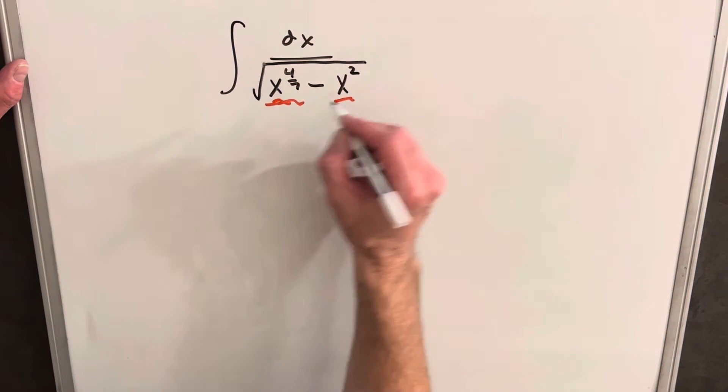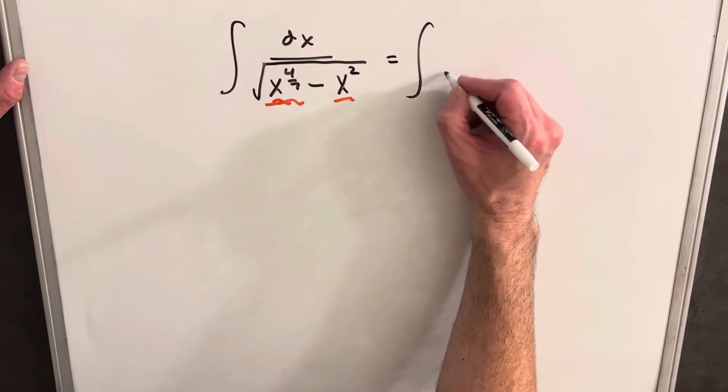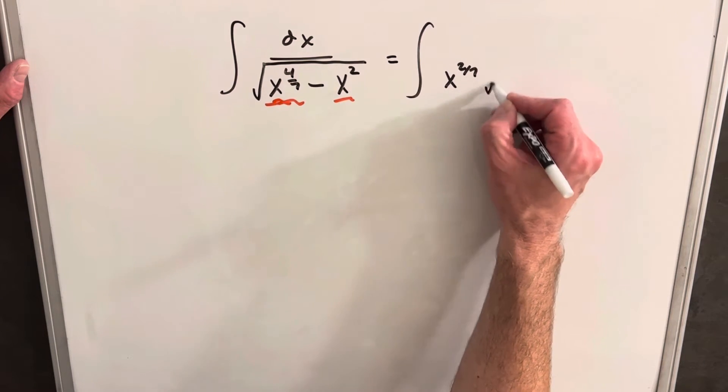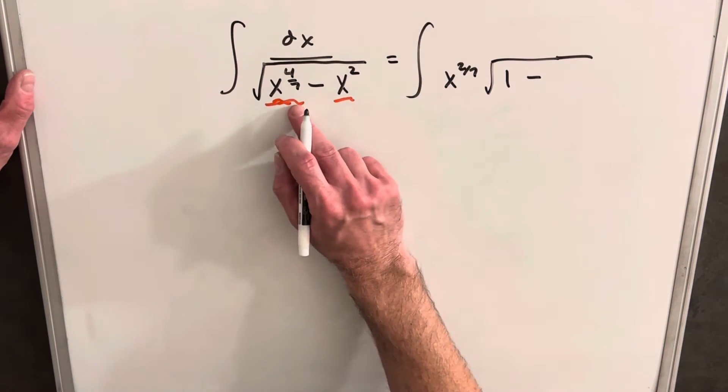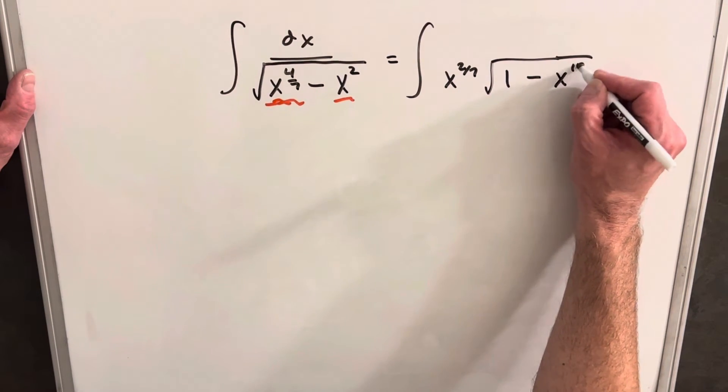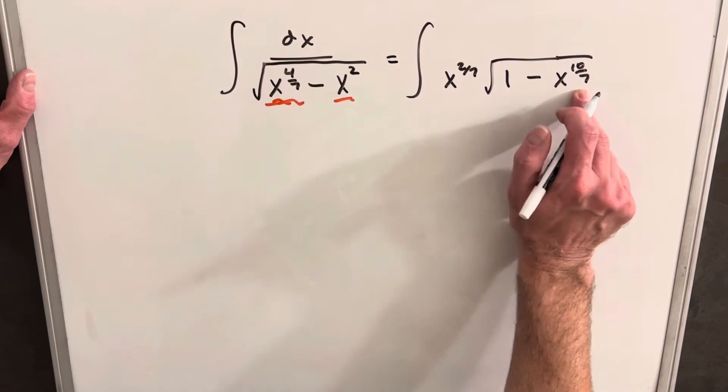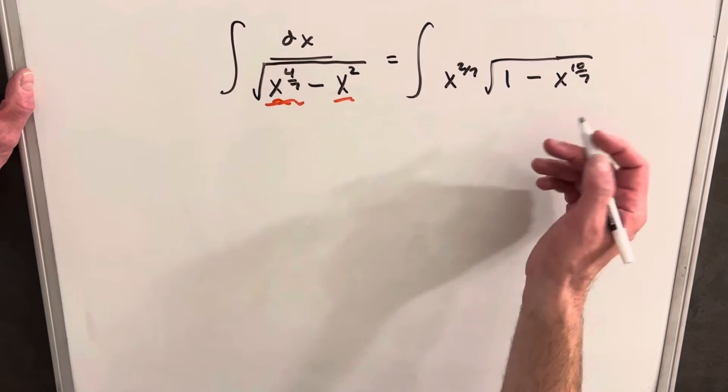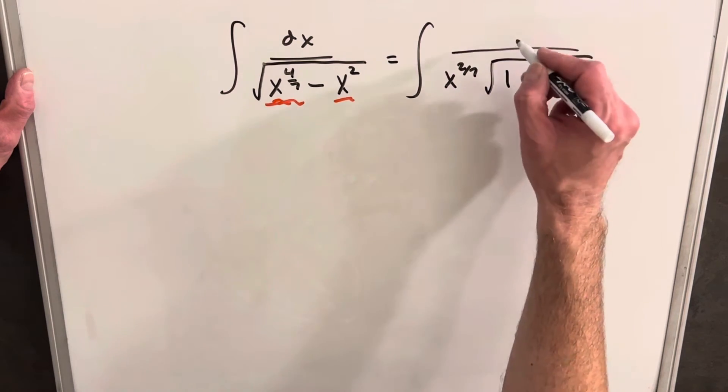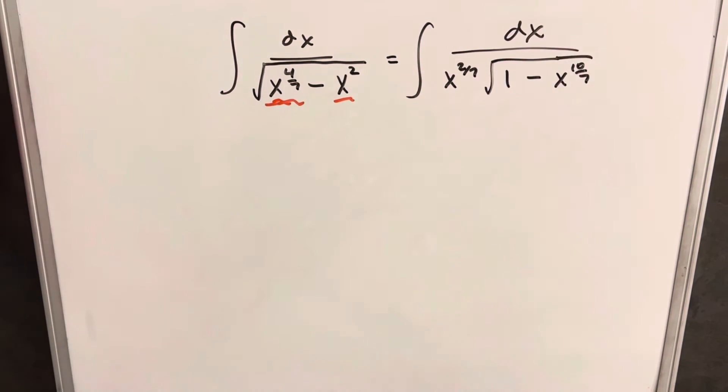When we take the square root of x to the four sevenths, we're going to have x to the two sevenths. So we'll just pull that out here. This other term, notice that x to the ten sevenths times x to the four sevenths, adding exponents is 14 over seven, which is two. So this is going to be a good factoring right here.